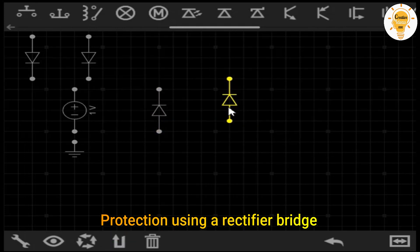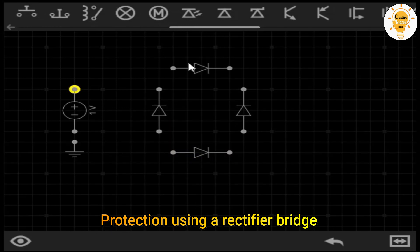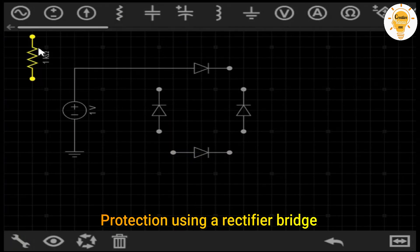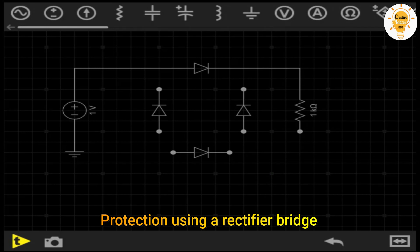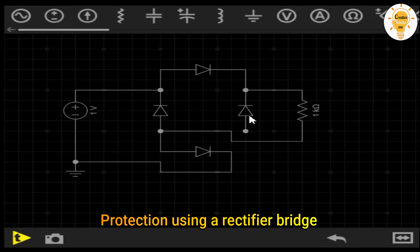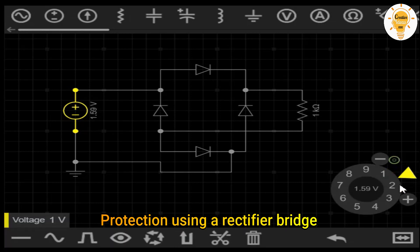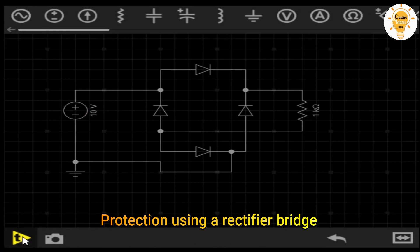In this second reverse polarity protection circuit, we will use a rectifier bridge. The difference with the previous one is that with this bridge, we will rectify the current so that our circuit will work regardless of how it is connected. Like the previous one, it is only recommended for low voltage and current circuits since the heat dissipation of the diodes is proportional to the amount of current passing through them.